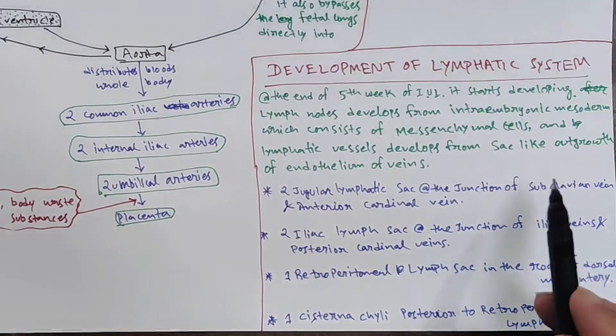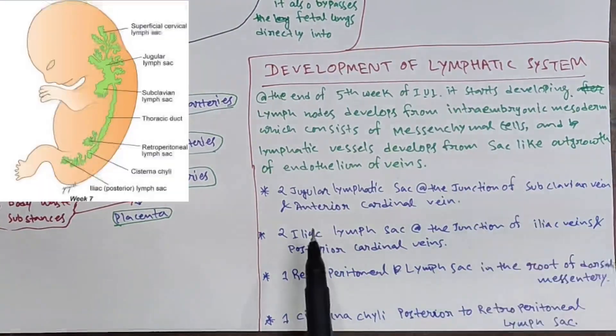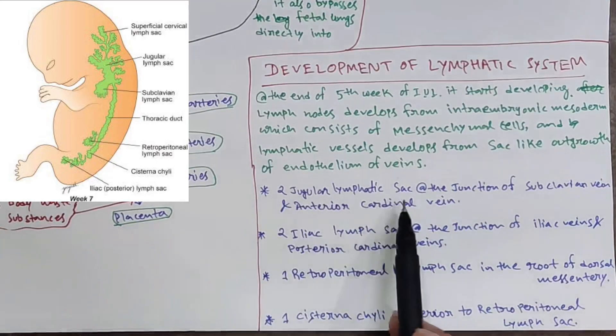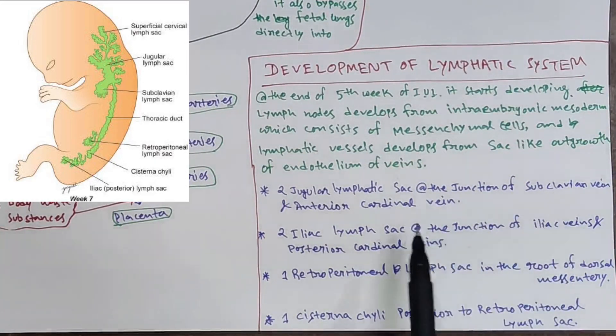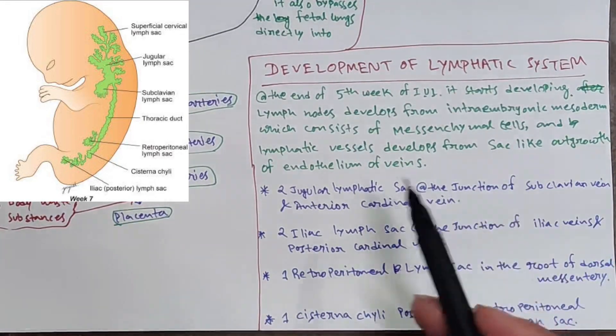Two jugular lymphatic sacs develop at the junction of the subclavian vein and anterior cardinal vein. The anterior cardinal vein and subclavian vein you already know about.